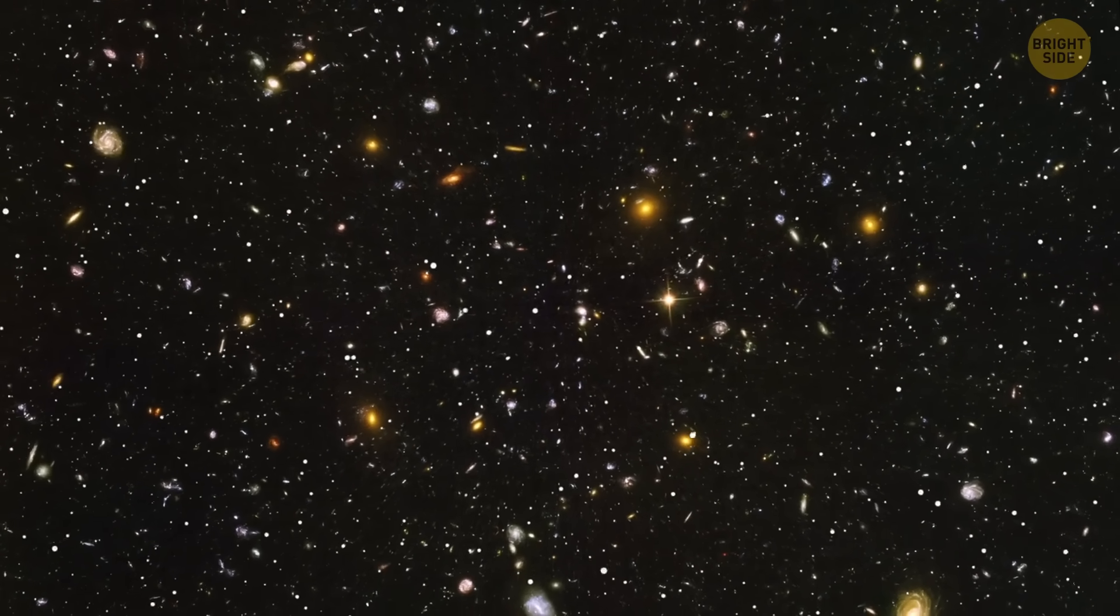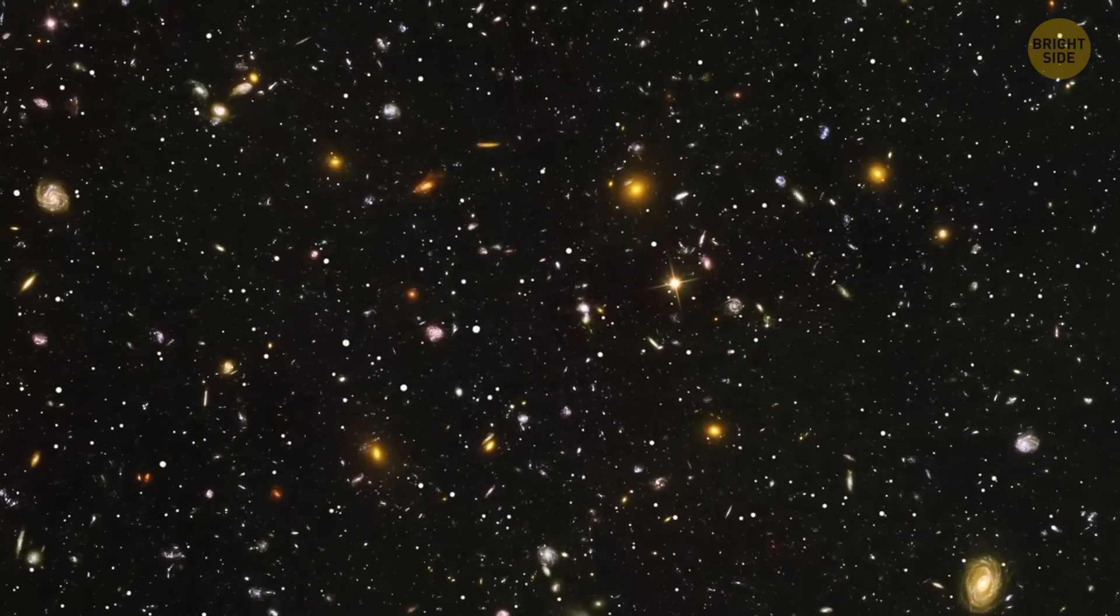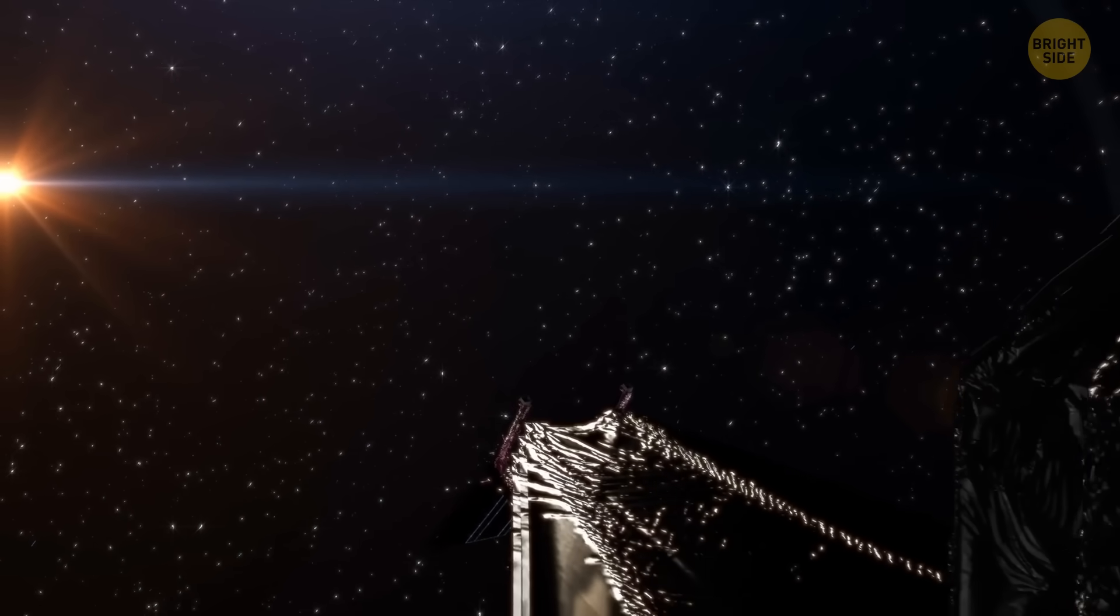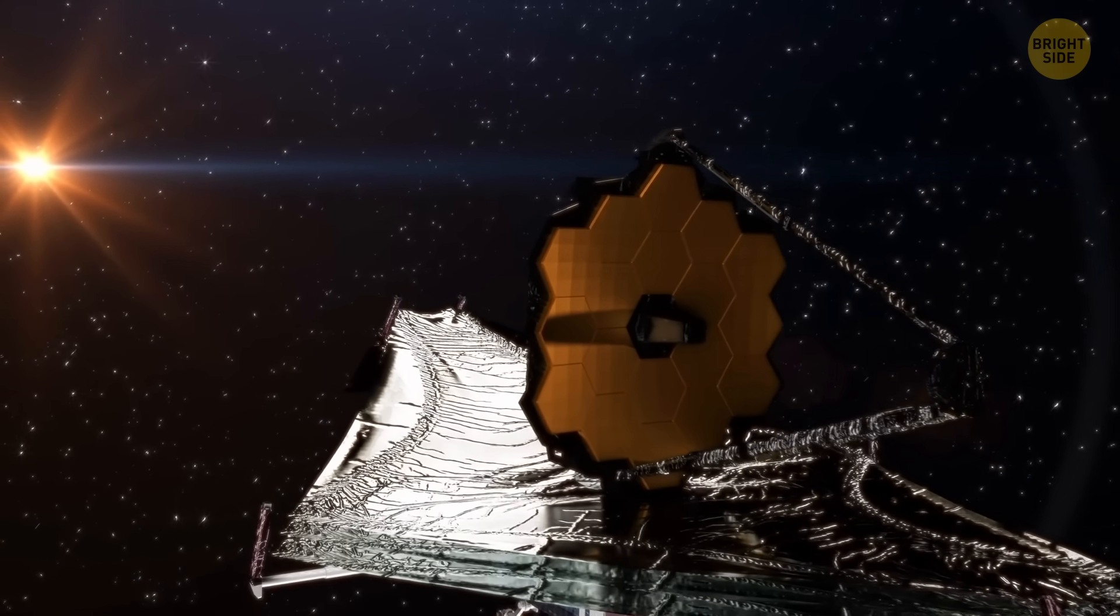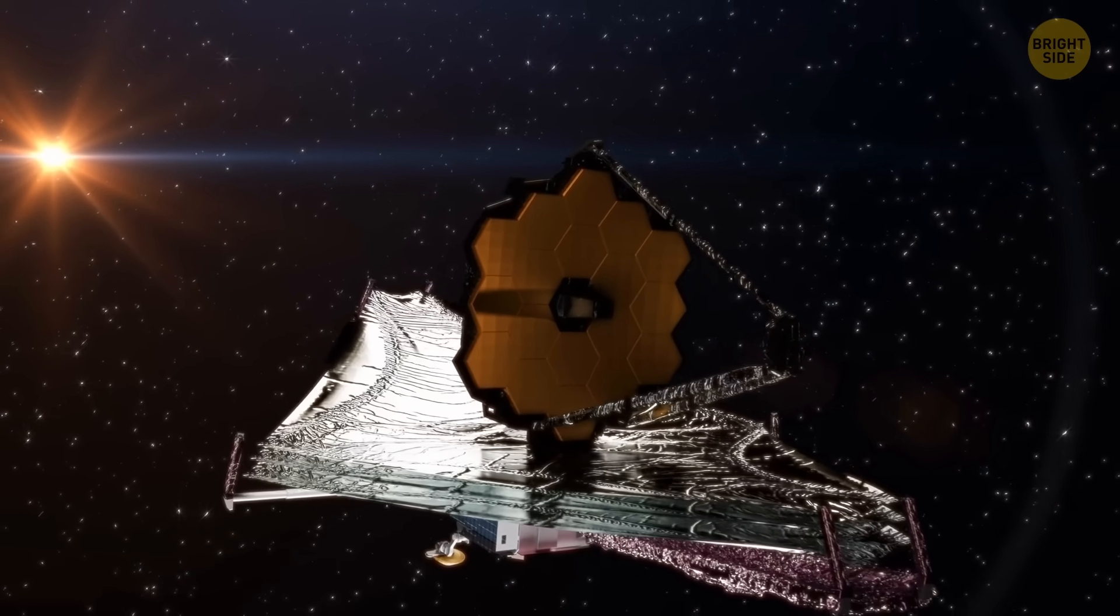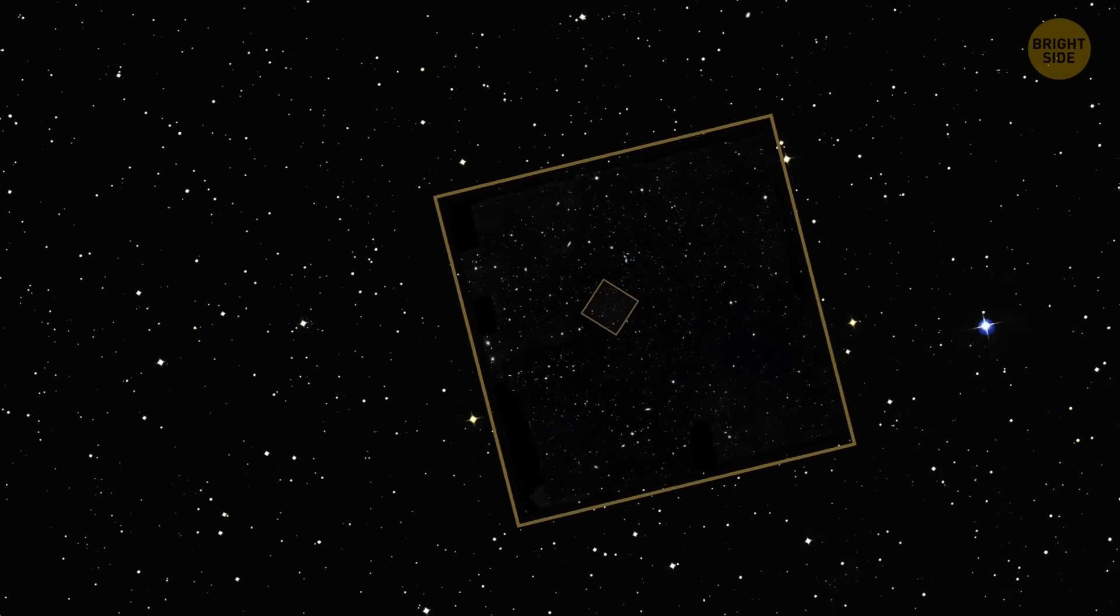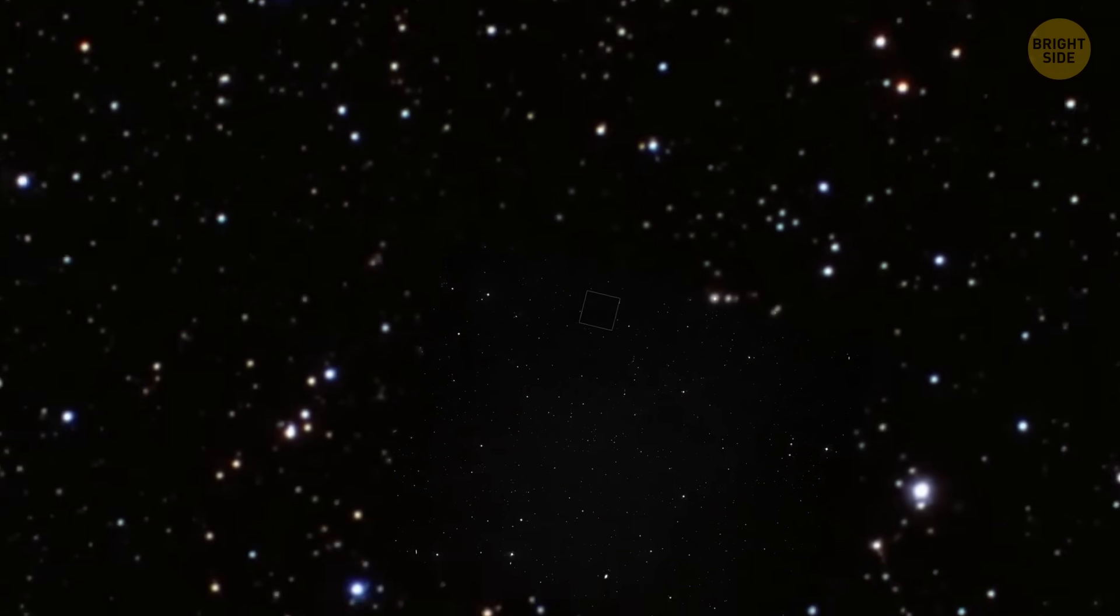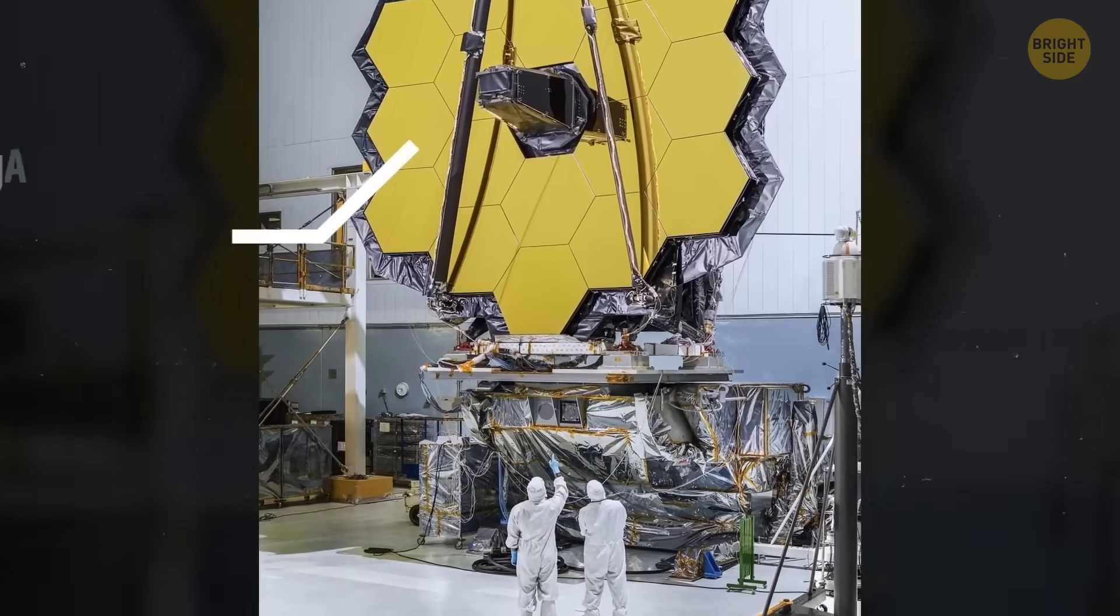Now, how about we talk about the device that helped astronomers to discover those bizarre galaxies? The James Webb Space Telescope is an absolutely stunning piece of equipment, which is around 100 times more powerful than the Hubble Space Telescope and on the pricey side, to put it mildly.